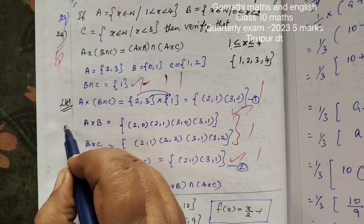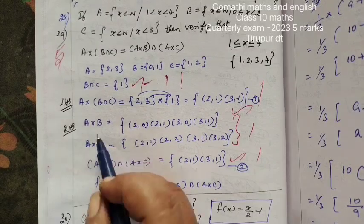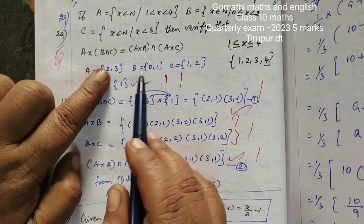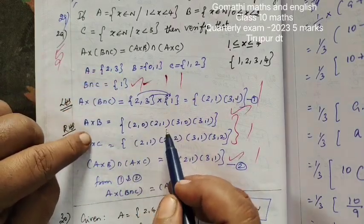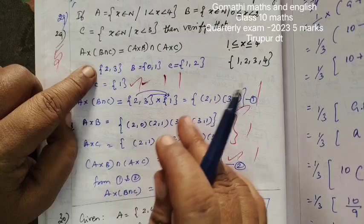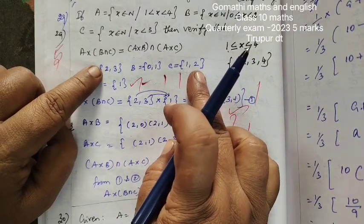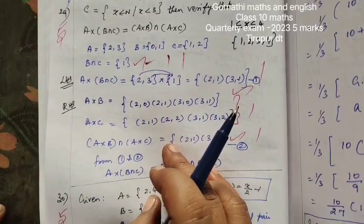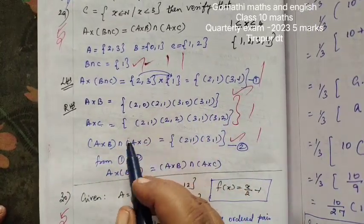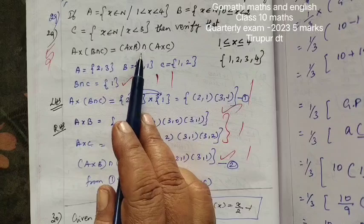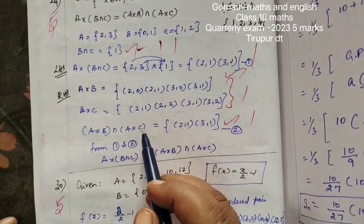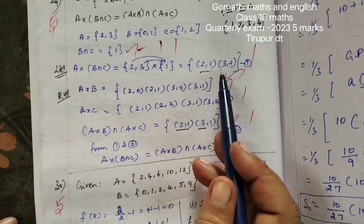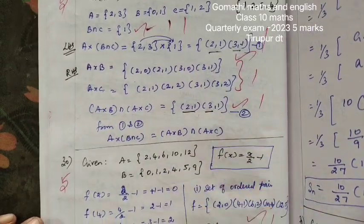Next, A cross B — this is the RHS. In RHS, A cross B means: (2,0), (2,1), (3,0), (3,1). A cross C gives: (2,1), (2,2), (3,1), (3,2). Then (A cross B) intersection (A cross C) — what is common? (2,1) and (3,1). So LHS gives (2,1), (3,1) and RHS gives (2,1), (3,1). Both are equal.